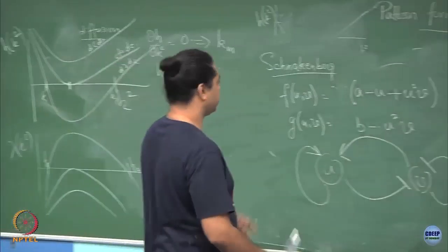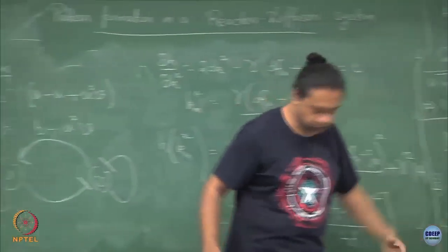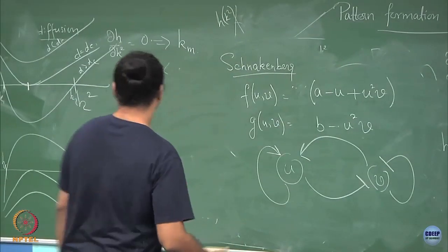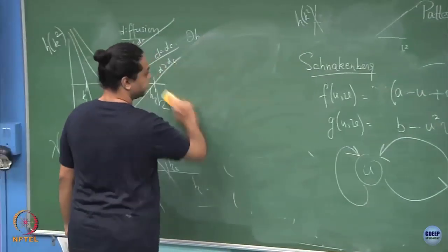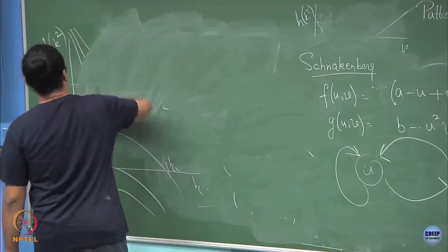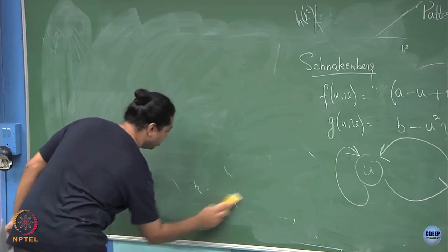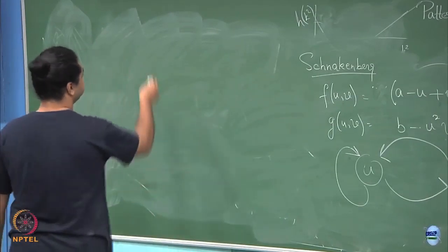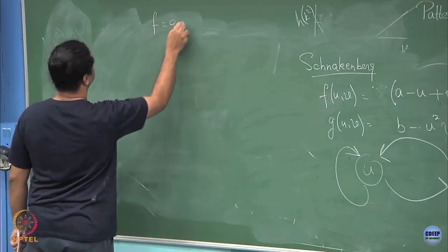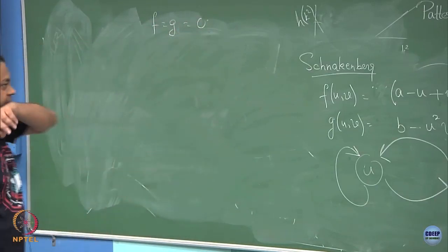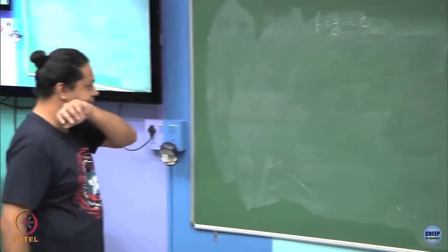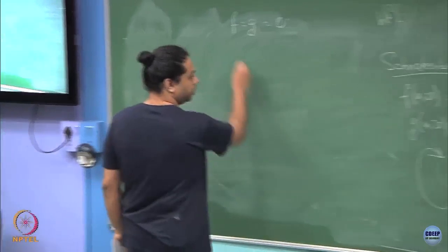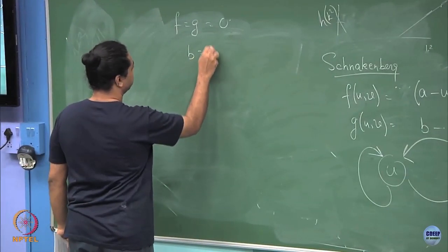We can look at what these four conditions mean for the Schnakenberg kinetics. For example, trivially let us just say what is the steady state. What is, in the absence of diffusion, the homogeneous steady state that you would have? Remember the homogeneous steady state is given by f equal to g equal to 0, because in the absence of diffusion del u del t equals 0, del v del t equals 0, which means b is equal to u square v.